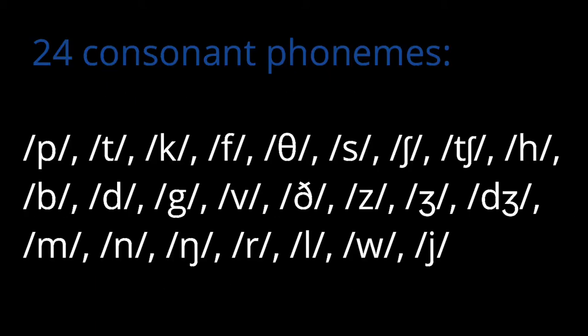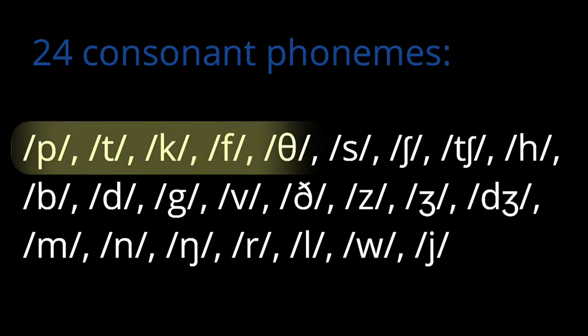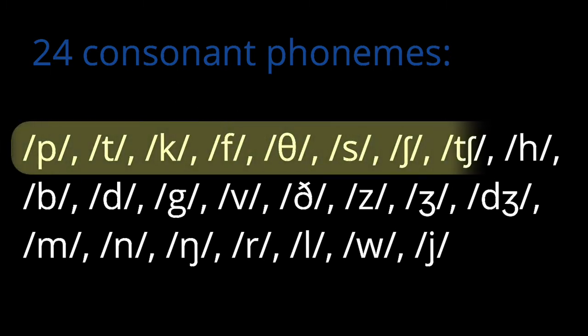There are 24 consonant phonemes: p, t, k, f, θ, s, ʃ, tʃ, h.